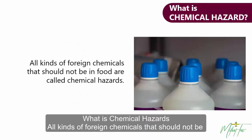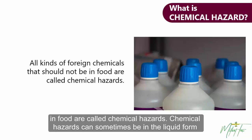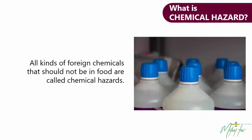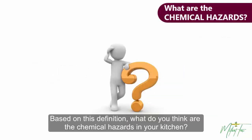What are chemical hazards? All kinds of foreign chemicals that should not be in food are called chemical hazards. Chemical hazards can sometimes be in liquid form that we can see with the eye, and sometimes in the form of gas that we cannot see. Based on this definition, what do you think are the chemical hazards in your kitchen?